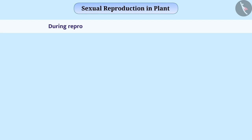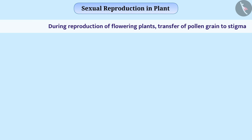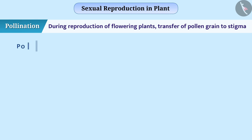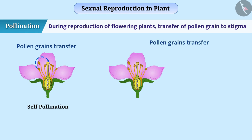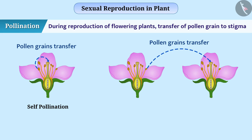During reproduction of flowering plants, it is necessary to transfer pollen grain to the stigma. We call this pollination. If the pollen grain is transferred from the anther of a flower to the stigma of the same flower, it is called self-pollination. When pollen grain is transferred from the anther of one flower to the stigma of another flower, it is called cross-pollination.